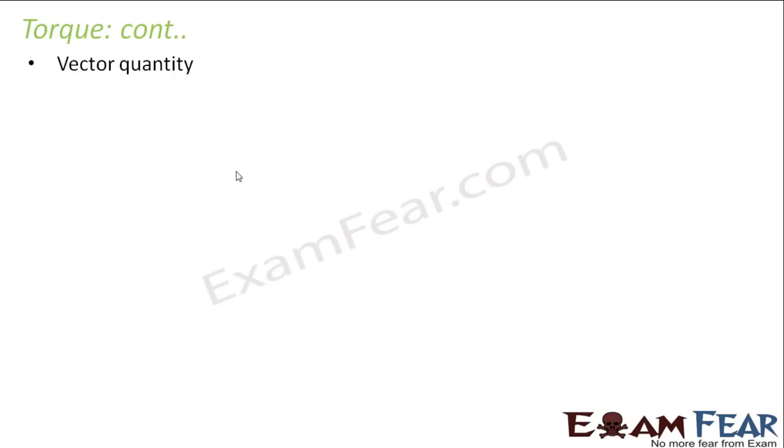Now torque is a vector quantity because it is defined not only by magnitude but also by direction. SI unit is Newton meter because it is given by the product of the position vector R and force, and the unit for force is Newton and the unit for R that is the position vector is meter. Therefore, the SI unit for torque is Newton meter.